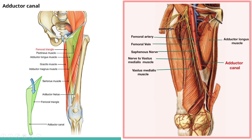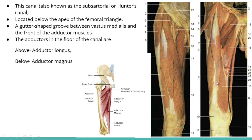It's a tunnel shape, and the adductor canal ends at the adductor hiatus. The adductor canal is also known as the subsartorial canal. It is located beneath the sartorius muscle — this is the long sartorius muscle — and another name is Hunter's canal.